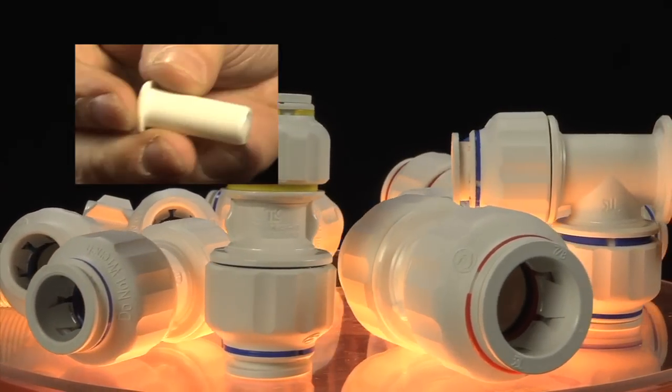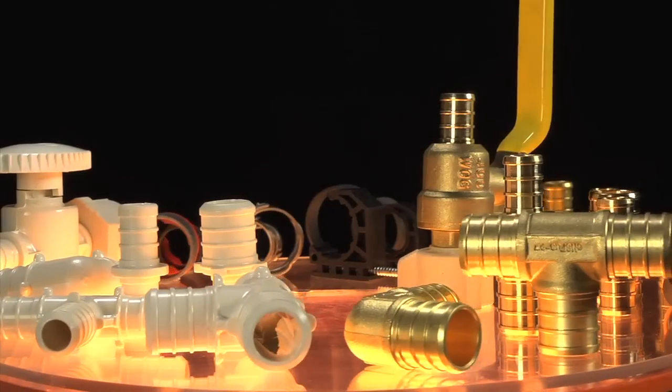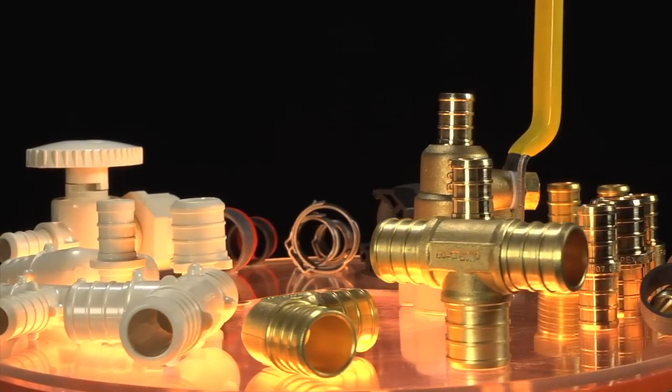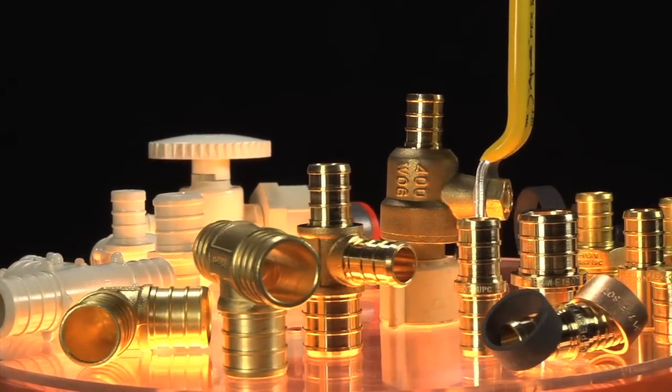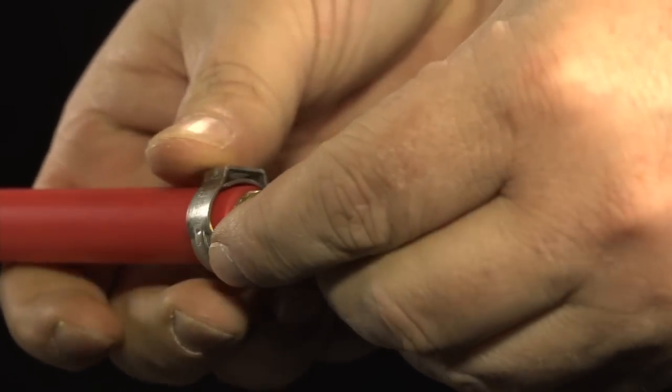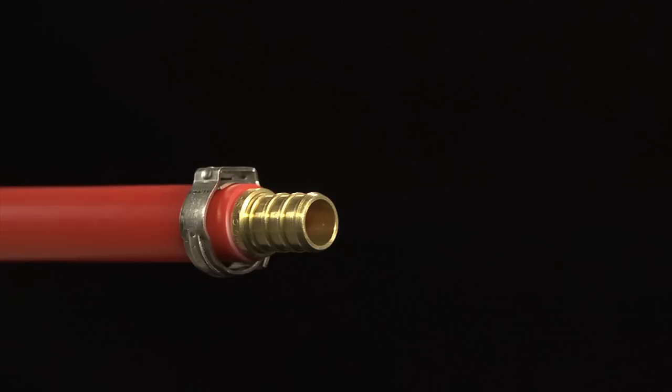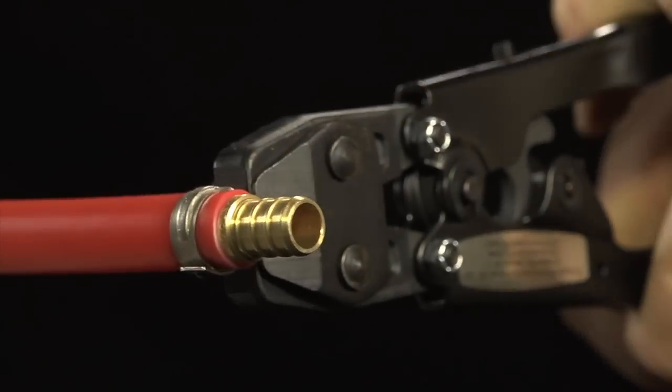Apollo also offers a wide range of brass and poly-alloy barb fittings that can be used with PEX pipe. Barb PEX fittings are easy to install and require no soldering or glues when used with PEX tubing. The ridges or barbs on the part of the fitting that is inserted into the tubing distinguish a PEX fitting from other fittings.